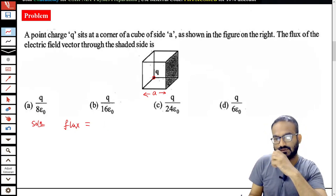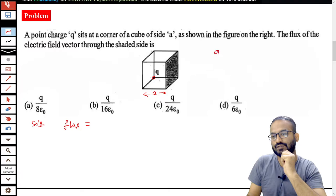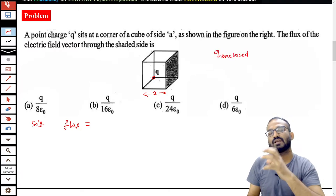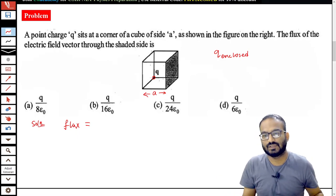Now the question is, in Gauss law, Q is not simple Q. It is Q enclosed. The charge must be enclosed by some surface. But you see in this problem, the charge is sitting at the corner.